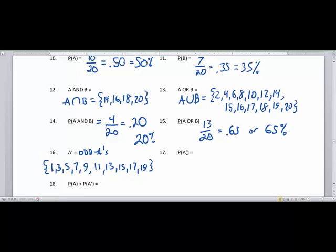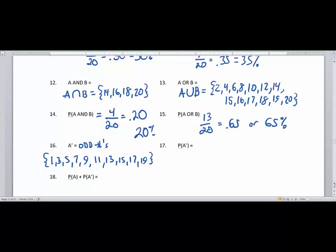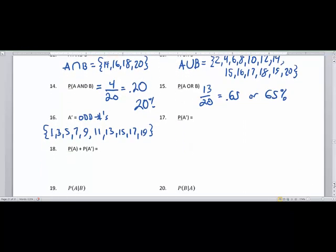And therefore, the probability of A prime would be the number of elements out of set S. But I'd like you to maybe do problem 17 and 18 together. Problem 17 and 18 would be best done together because they are connected in a way. So please go pause the video, try 17 and 18, and unpause it and see what you find.